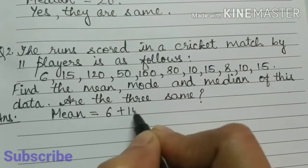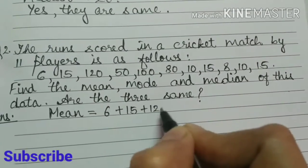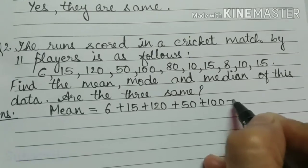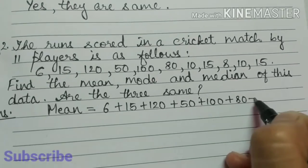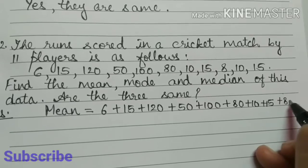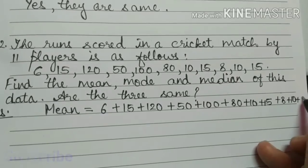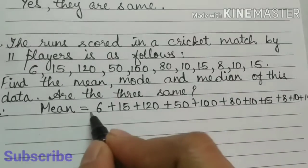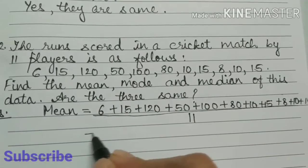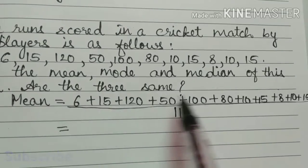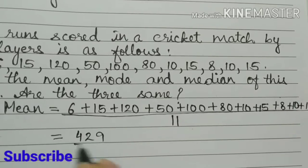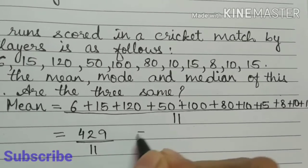So 6 plus 15 plus 120 plus 50 plus 100 plus 80 plus 10 plus 15 plus 8 plus 10 plus 15, all divided by 11. 11 players are there. On adding this we will get 429 divided by 11.